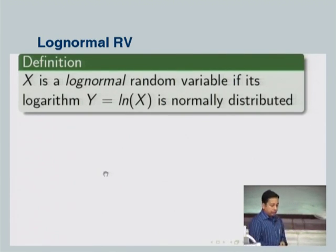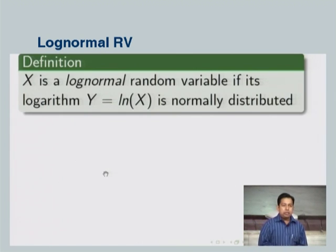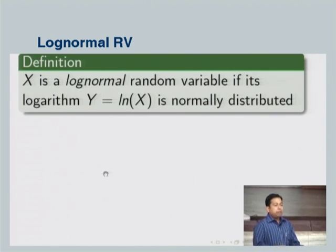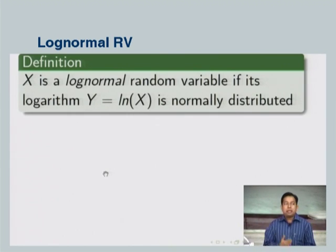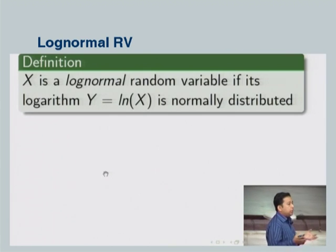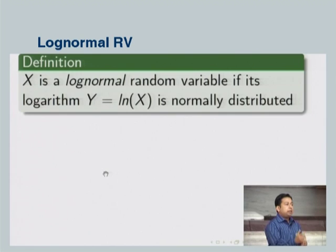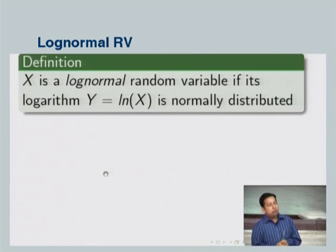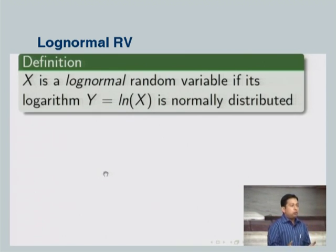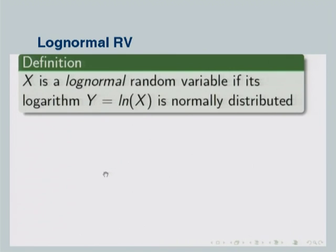We now move to the log-normal distribution, which is closely related to the normal and has wide applications. Its primary use is when dealing with multiplication of random variables. The overall goal when working with real-life data is to fit a known distribution, because once we have that description, it is easy to incorporate uncertainty and variability in calculations.